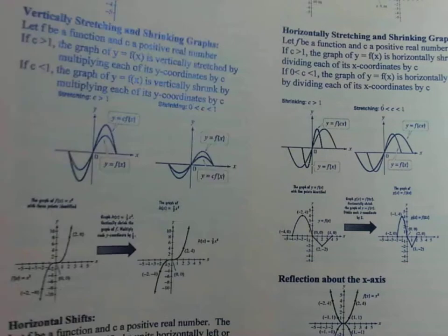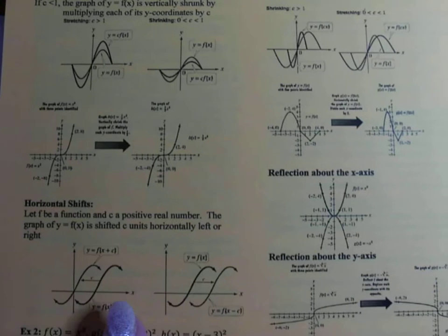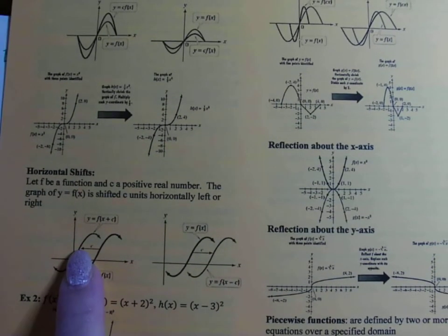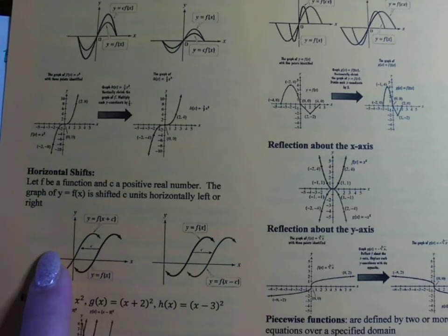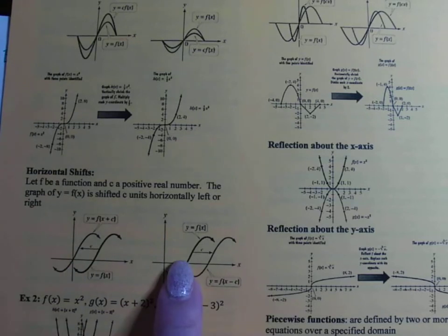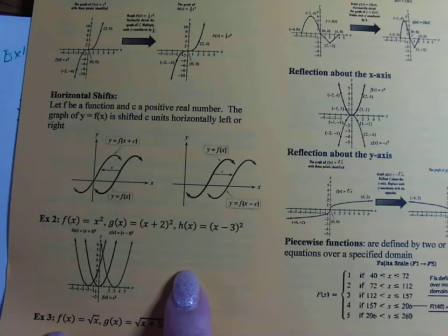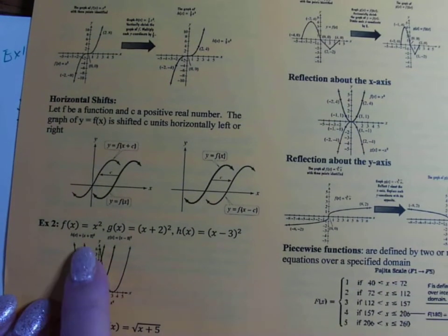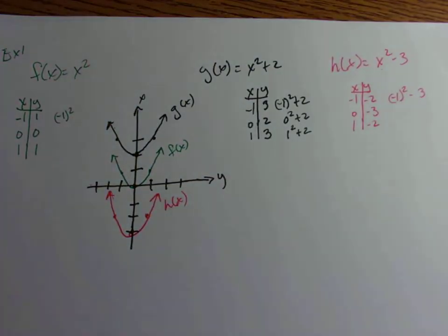Now let's look at horizontal shifts. When the change is inside the function, it goes opposite of what you'd expect: adding C moves the graph to the left, and subtracting C moves it to the right. Example two on your handout shows the parent function's graph shifting left and right.